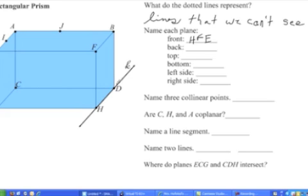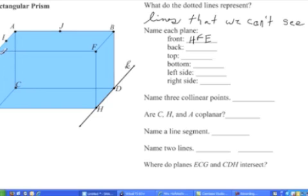For the left side, you have points A, I, E, G, and C to choose from. Pick any three except A, I, E — those are collinear. You can't use three collinear points to define a plane. For the right side, you have points B, F, H, and D — pick any three of those.